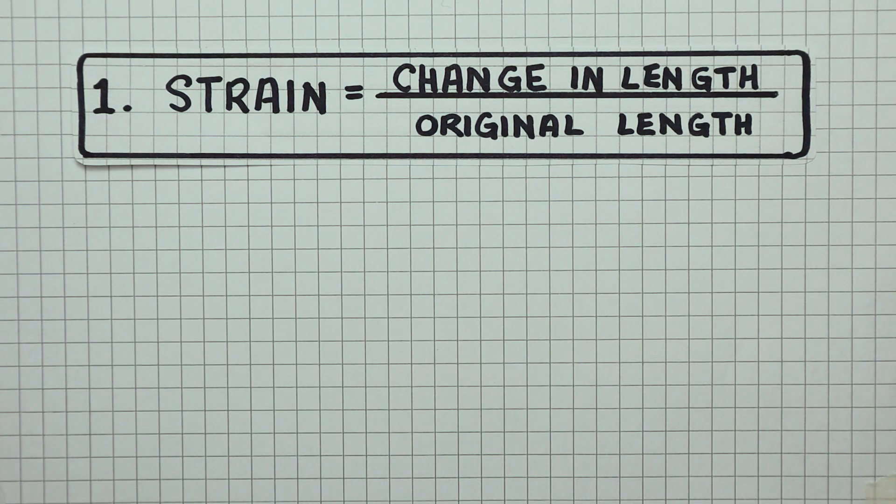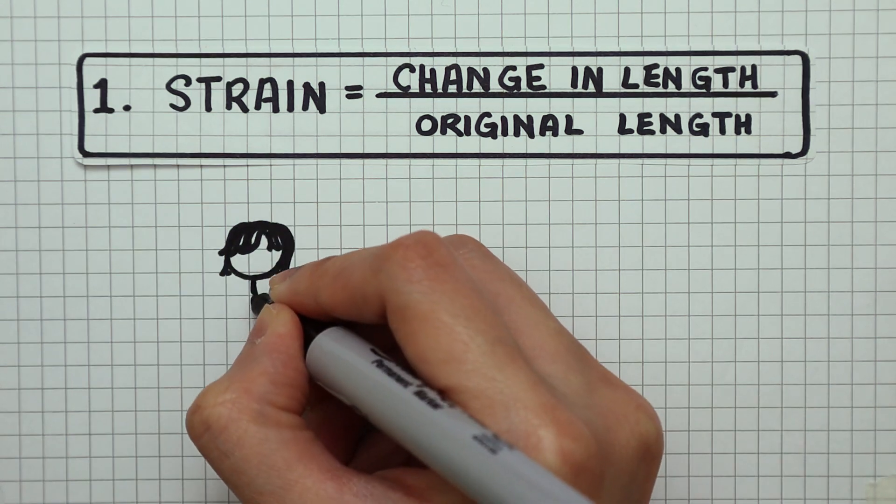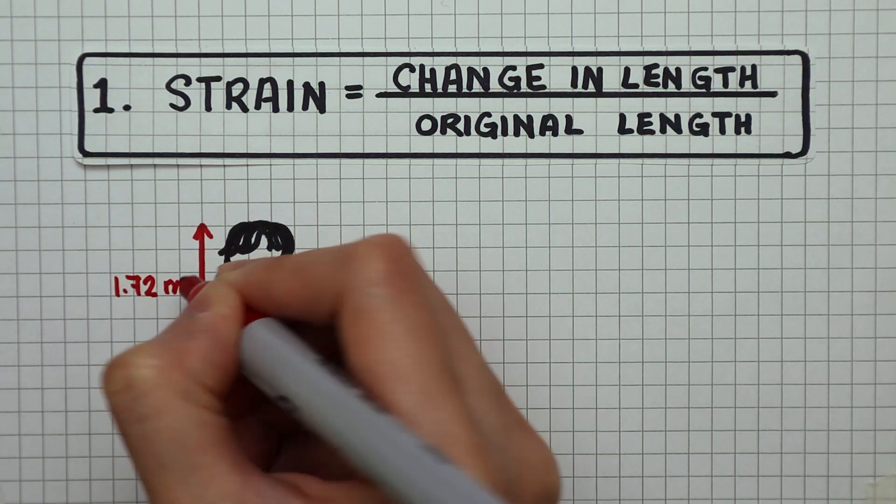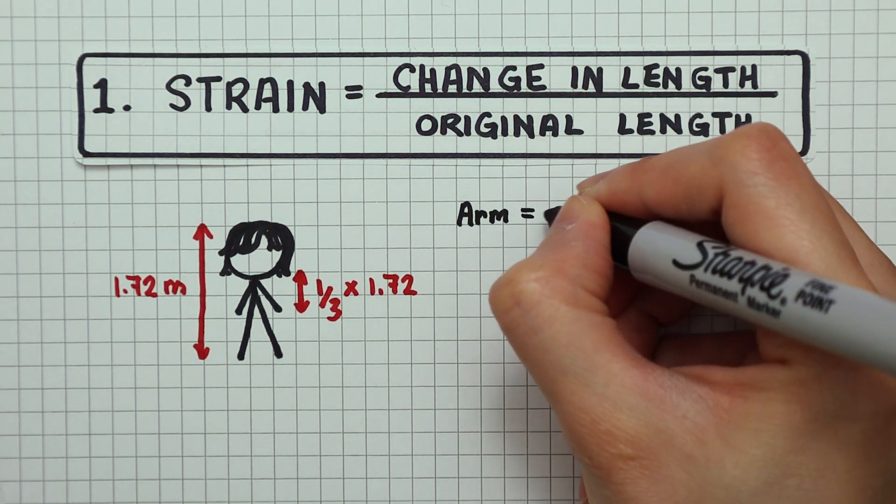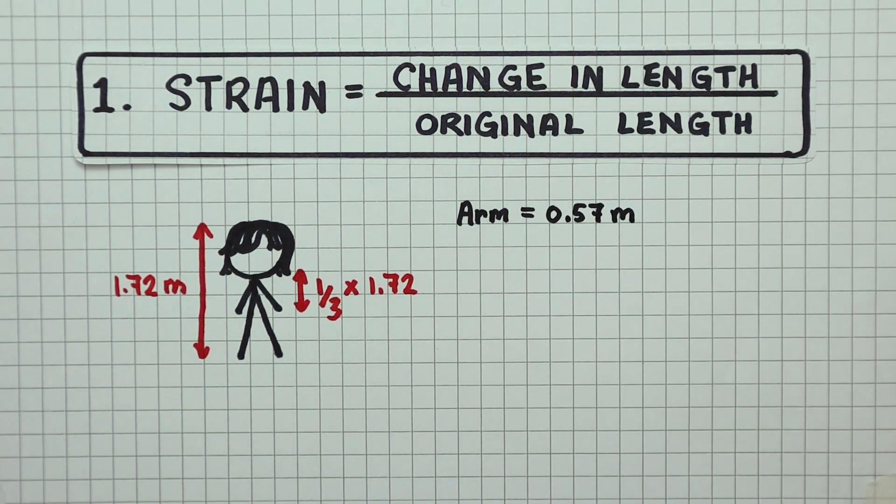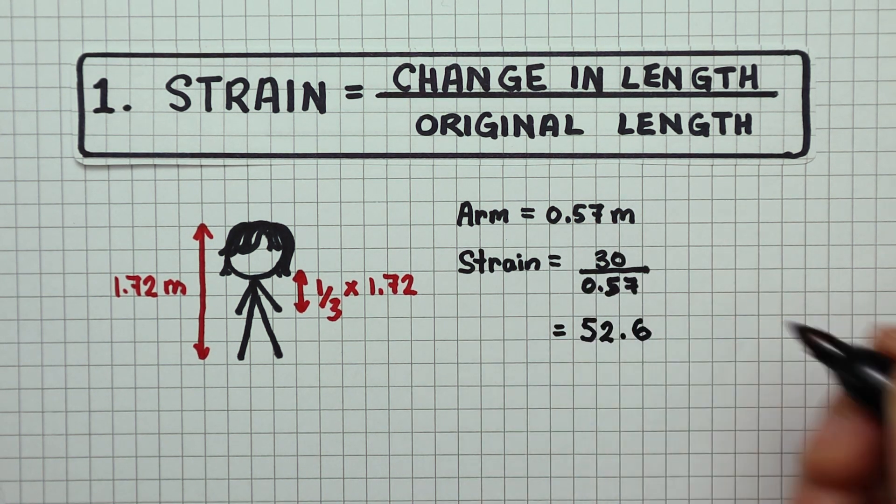First equation. Strain is the change in length divided by the original length. From what is seen in the movie, her arm is approximately one-third of her height. So let's make the assumption that the length of her arm is roughly 0.57 meters. The strain works out to be 52.6.